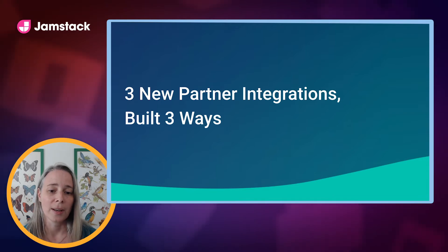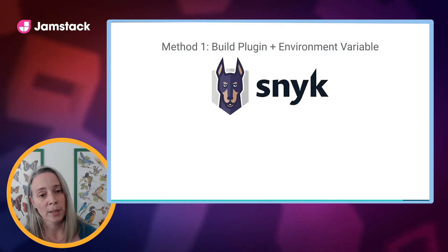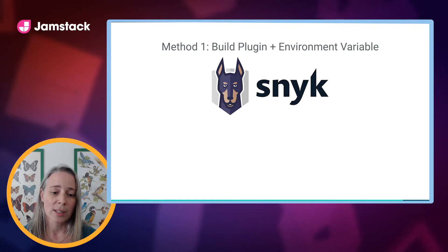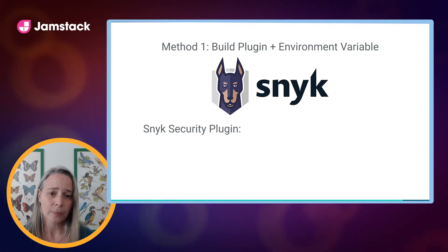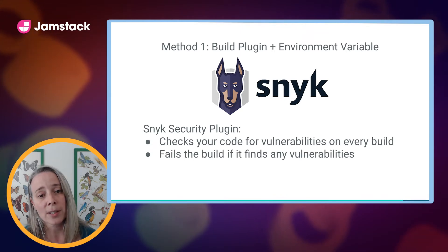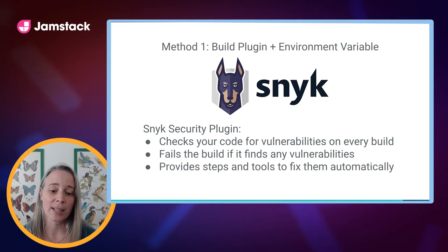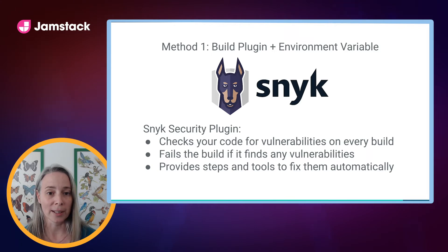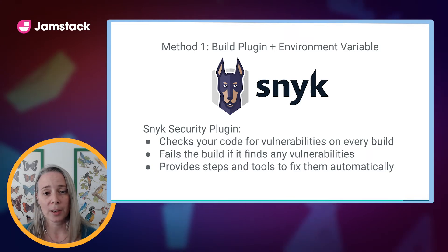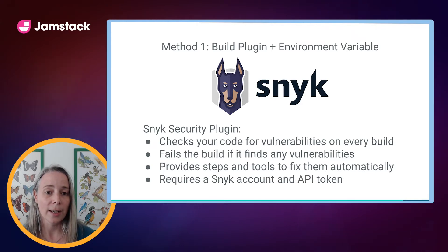To start the first one, I'm going to talk about SNCC. They've created a build plugin that works with an environment variable. SNCC's security plugin checks your code for vulnerabilities on every build. Then it fails the build if it finds any vulnerabilities, and it provides steps and tools to help you fix those vulnerabilities automatically. This can provide a lot of security for your site, but because it's interacting with SNCC's service, it requires a SNCC account and an API token.